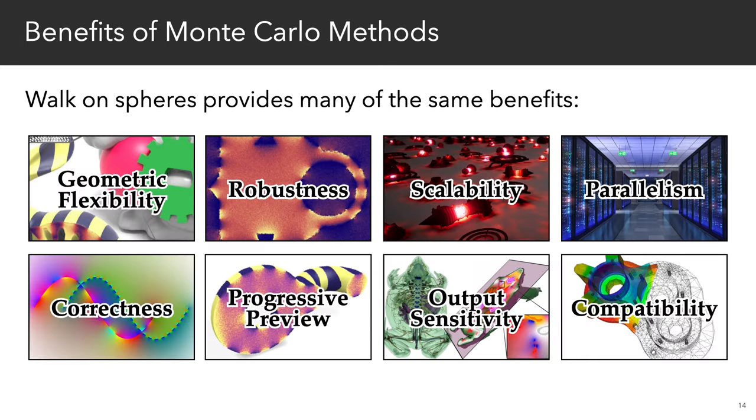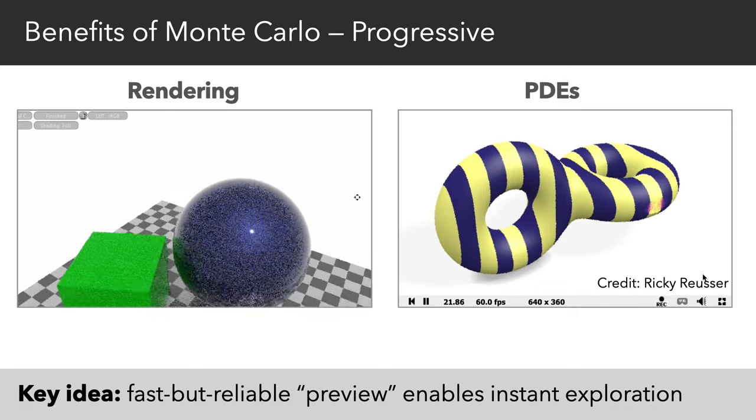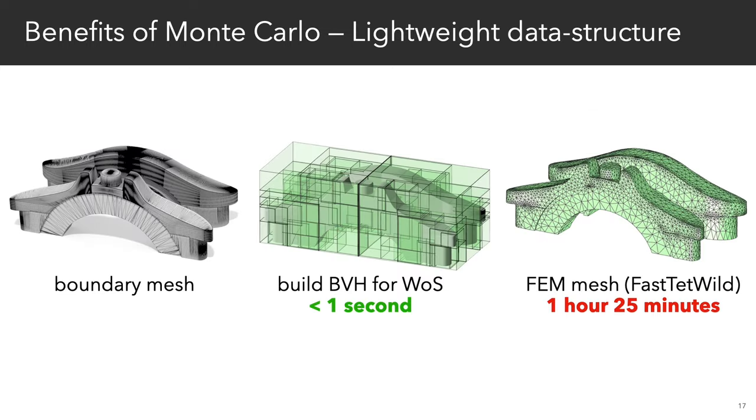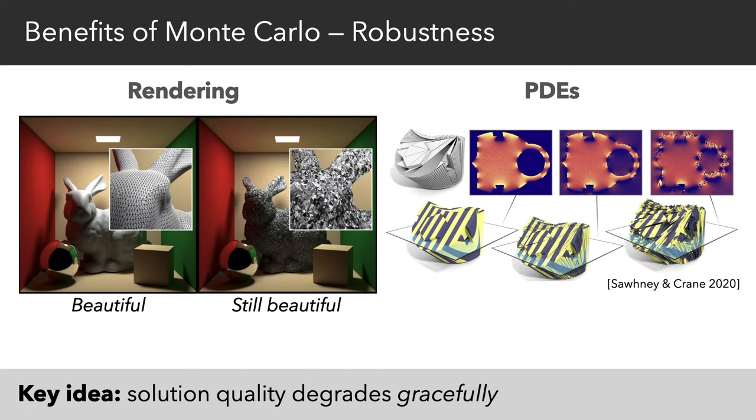So this is where I believe Monte Carlo methods like walk-on-spheres provide a lot of the same benefits we see with rendering today, such as progressive and view-dependent evaluation, perfect parallel scaling, hardware accelerated data structures such as bounding volume hierarchies, the ability to scale to billions of instance elements, and to easily handle geometry with defects and low-quality triangles.